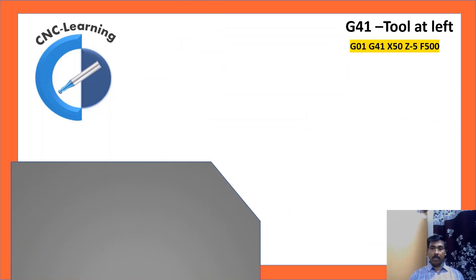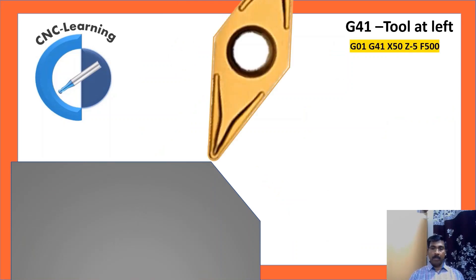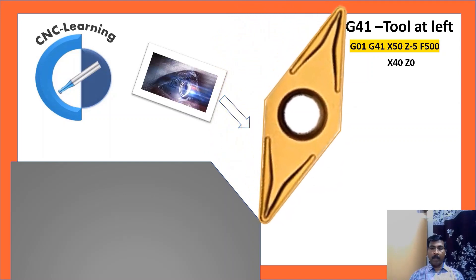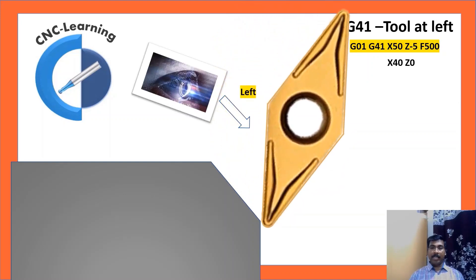G41, tool at left. The same profile, if you are starting from the other end and if the direction is changed, G41, X50Z-5, the tool is positioned at that point. And the cutting command is X40, Z0. Now let us see in the direction of cut, the tool is at left. That is why it is G41.